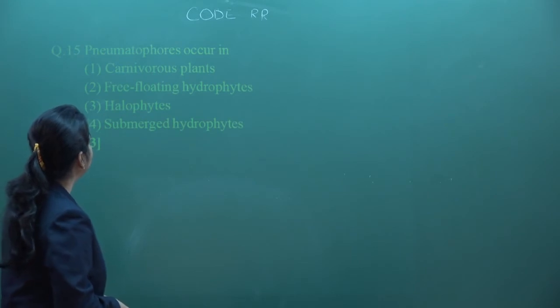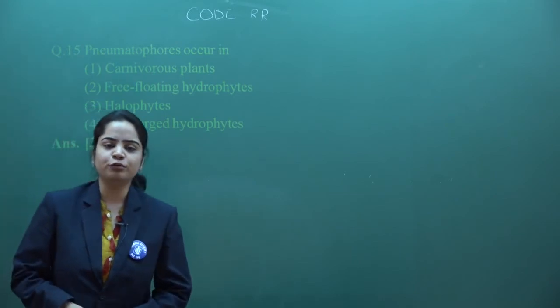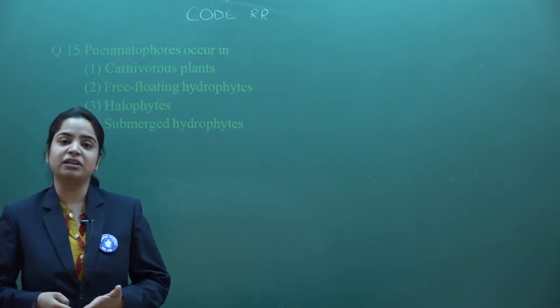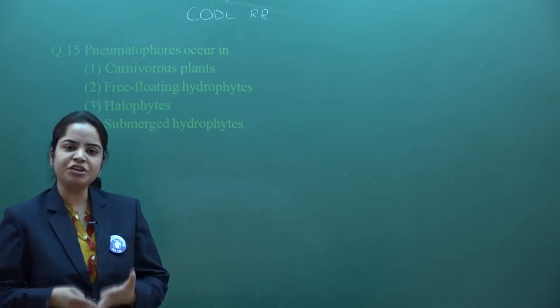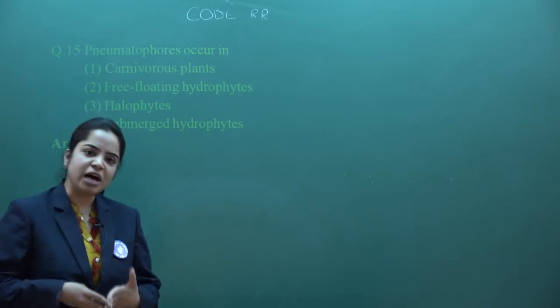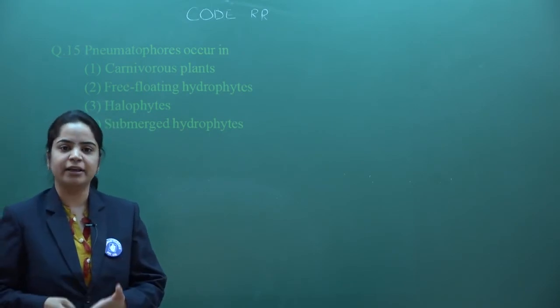The next question is question number 15. Pneumatophores occur in - pneumatophores are found in which plants? First of all we should know what pneumatophores are. This is an adaptation made by those plants which are found in high salt concentration.